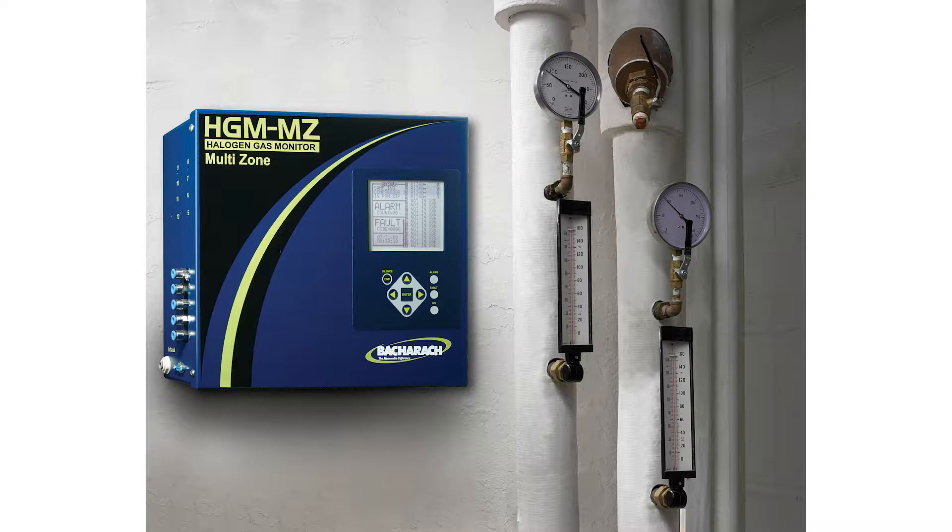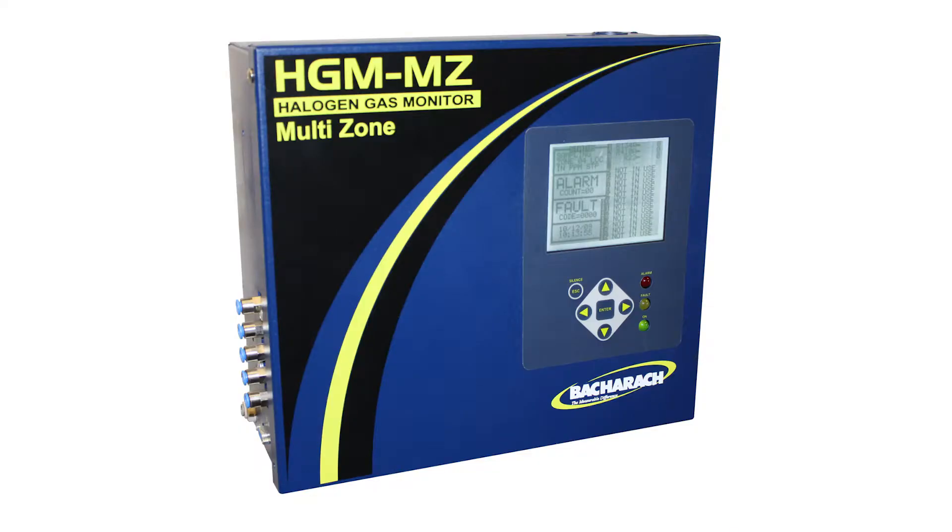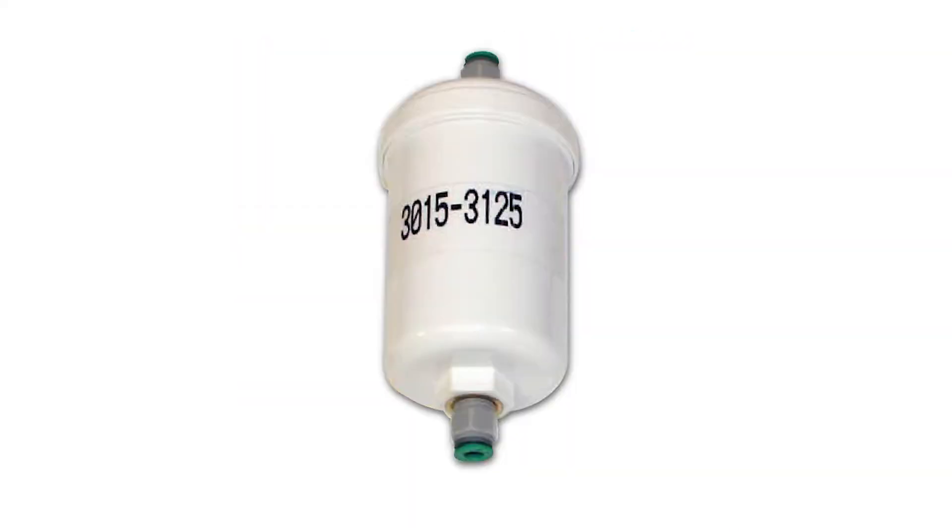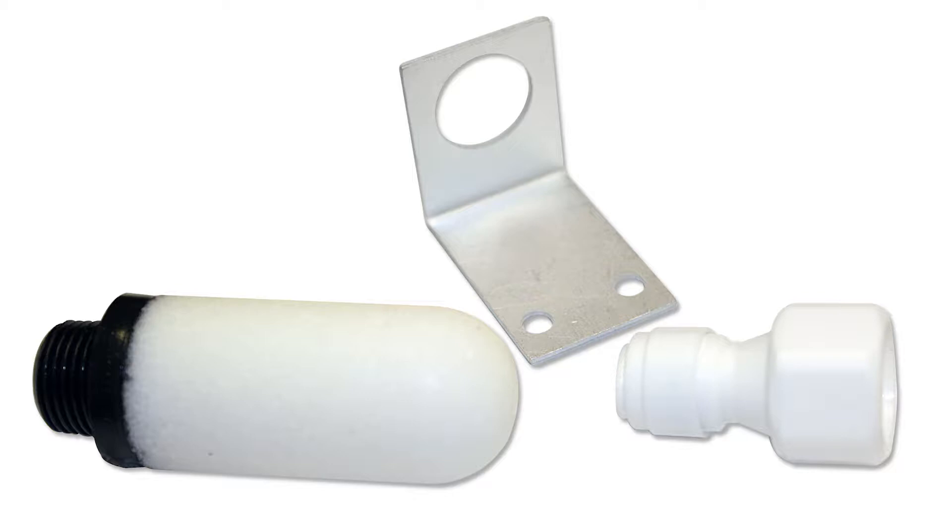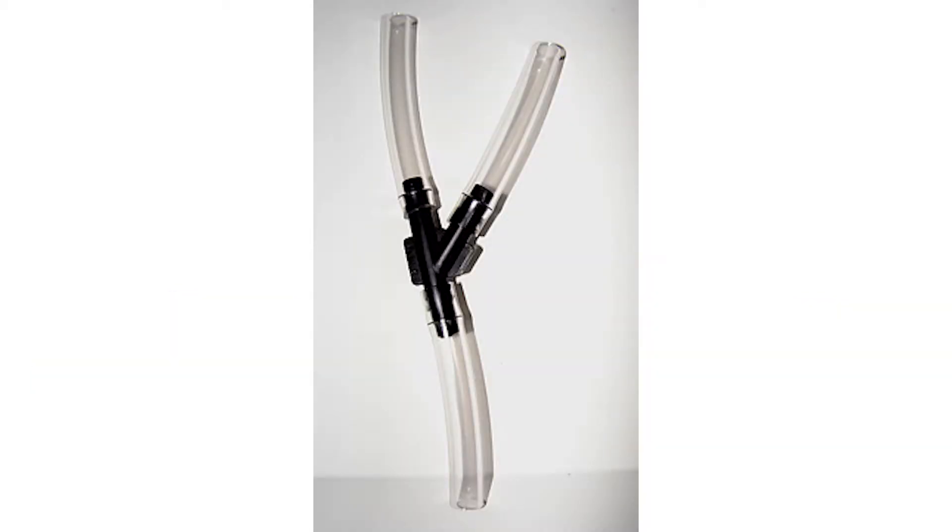When opening your package, the contents of the box should include the Multi-Zone Halogen Gas Monitor, a charcoal filter that will be used in the purge process, four line-in filters that will be used to gather samples, and a single splitter kit.